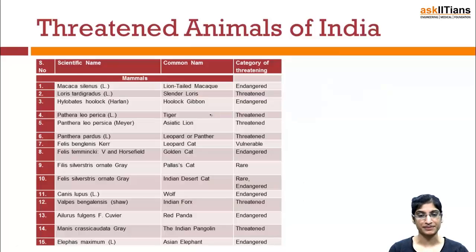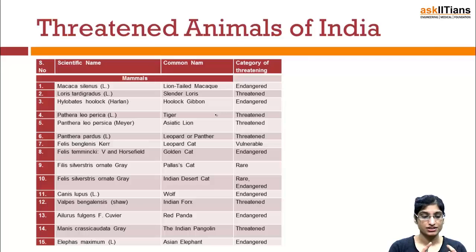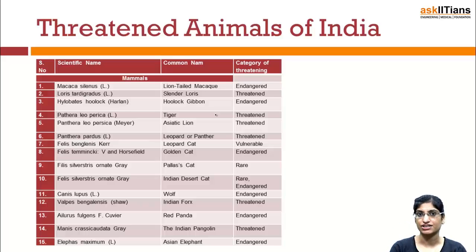Now for examples — very important examples. In multiple choice questions and subjective questions, you can be asked to write examples as well. At least 2 to 3 examples you must learn. Even in MCQs you have to identify which one is endangered and which one is critically endangered. So learn them. Lion-tailed macaque — Endangered.